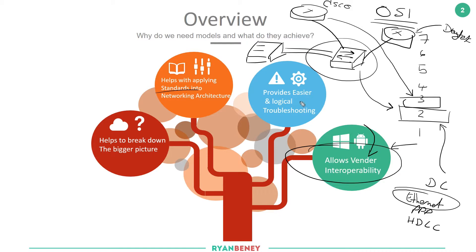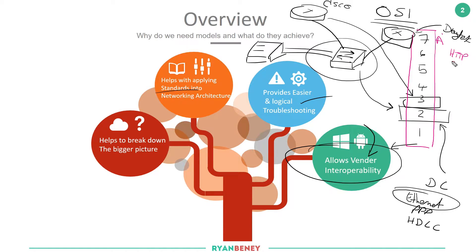The OSI model also allows logical troubleshooting. There are troubleshooting theories that come along with it: top-down, bottom-up, and divide and conquer. Top-down starts at the application layer, investigating things like HTTP and FTP, whereas bottom-up starts by checking the physical cabling. Network engineers are more inclined to go from the physical up, whereas software engineers may go top-down. However, the most common approach is divide and conquer.